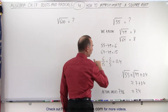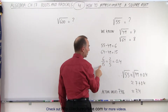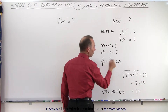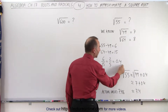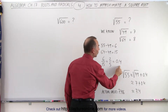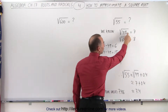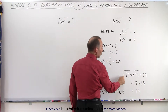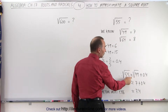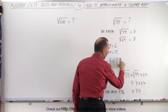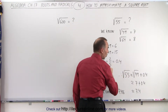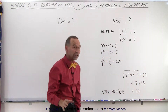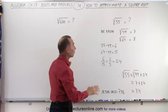If we now take that fraction — 6 divided by 15, which simplifies to 2 divided by 5, or equal to 0.4 — we simply add that number to the square root of the previous number, 49. So the square root of 55 is approximately equal to the square root of 49 plus this ratio, 0.4. Adding them together, we have an approximate value for the square root of 55.